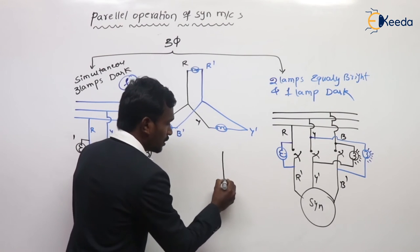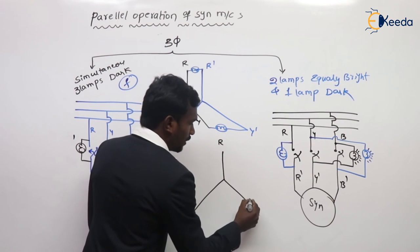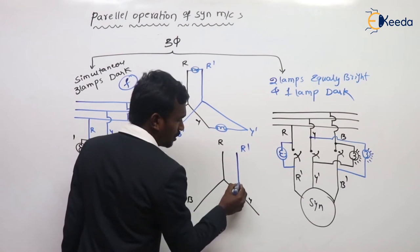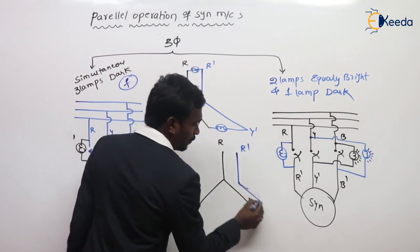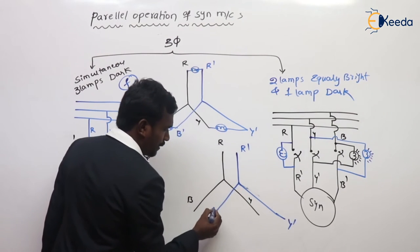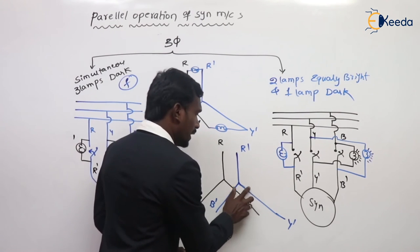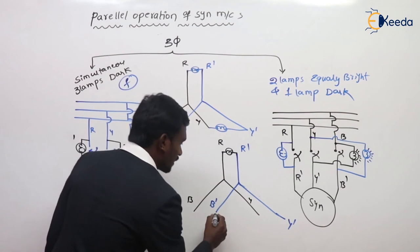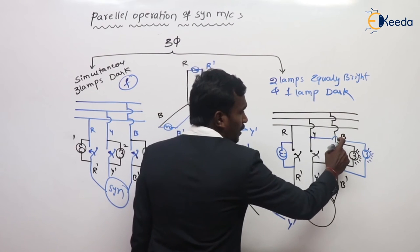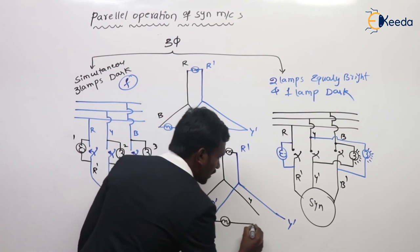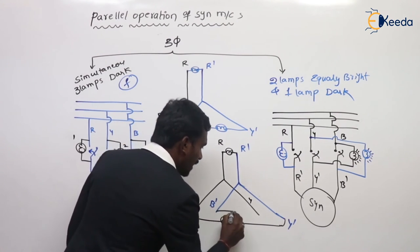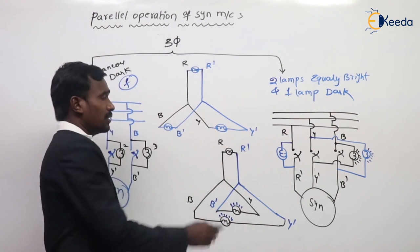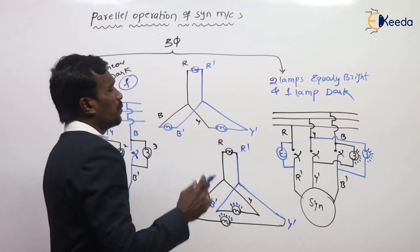To summarize the vector connections: first lamp is connected between R and R', which gives dark. Next lamp is connected between B and Y', and the third lamp between Y and B'. These two cross-connected lamps give bright light, while the R-R' lamp gives dark. Like that, we can make the machine parallel. This is the synchronization method for three-phase systems.